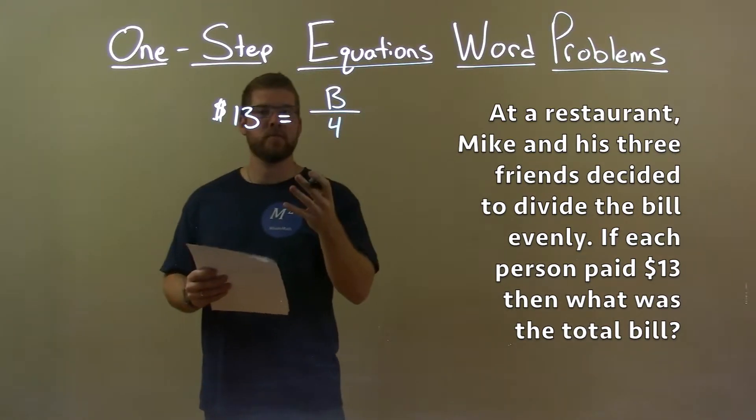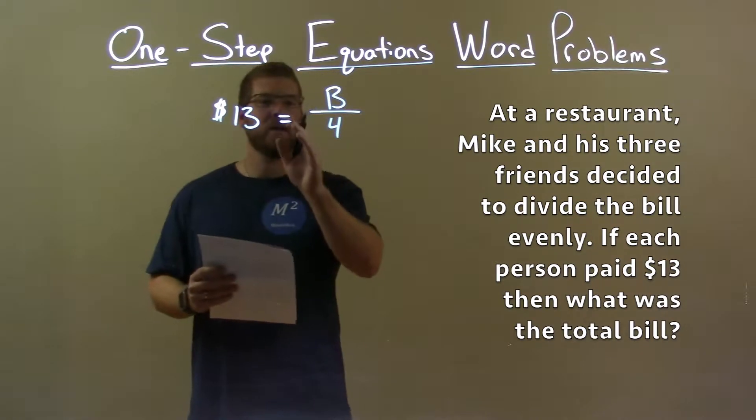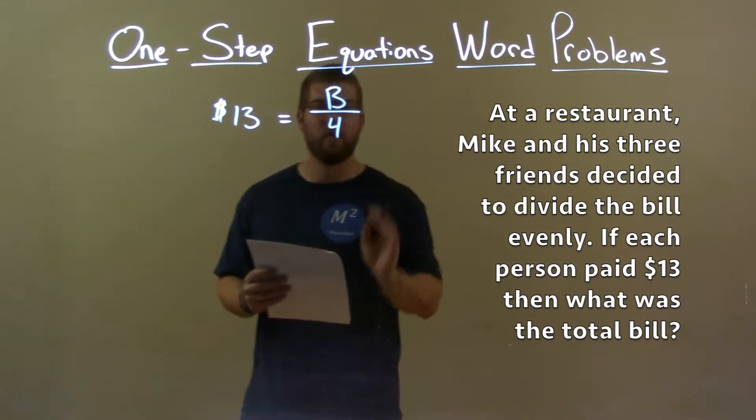we now have an equation. $13 each person equals a total bill divided by four ways.